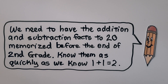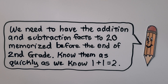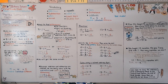We need to have addition and subtraction facts to 20 memorized before the end of 2nd grade, because in 3rd grade you'll be working on multiplication. We need to know these facts as quickly as we know 1 plus 1 equals 2. Maybe start playing games or using flashcards to remember those facts. Our next lesson, 3.7, we're going to use 10 to subtract. Keep trying hard — I'm proud of you!